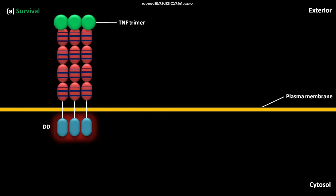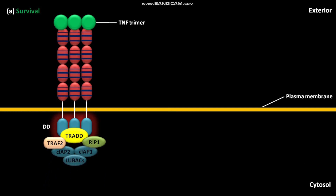The cytosolic TRADD adapter is then recruited to the active DD region of TNFR1. TRADD then binds the kinase RIP1, TRAF2, and several other proteins including CIAP2, CIAP1, and LUBAC. LUBAC generates linear ubiquitin chains on RIP1 and other molecules. This protein complex containing TRADD, RIP1, TRAF2, CIAP2, CIAP1, and LUBAC then recruits TAK1 and the IKK complex.